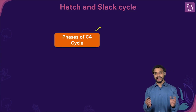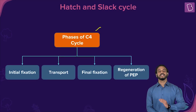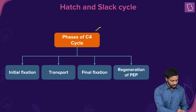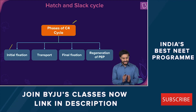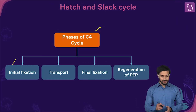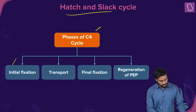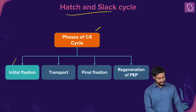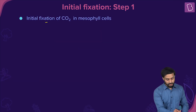Let's talk about the phases of the C4 cycle. There are four steps: initial fixation, followed by transportation, then final fixation, and then regeneration of PEP. We are talking about the Hatch and Slack cycle.